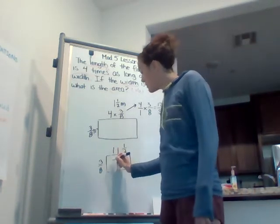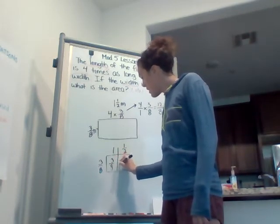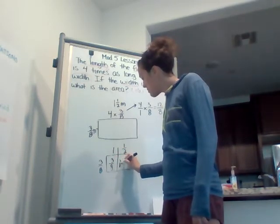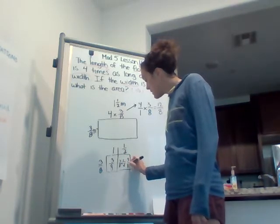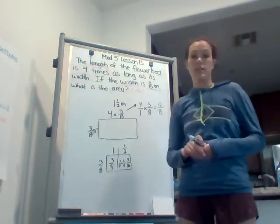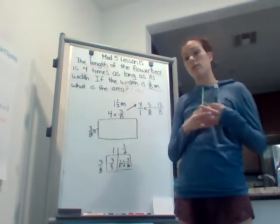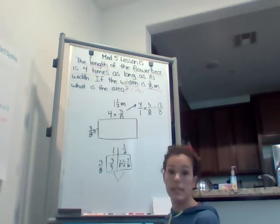3 eighths times 1 is just going to be 3 eighths, and then 3 eighths times 1 half is going to be 3 sixteenths. So now we have 3 eighths and 3 sixteenths. We're going to need to combine them together to get our area. So 3 eighths and 3 sixteenths.